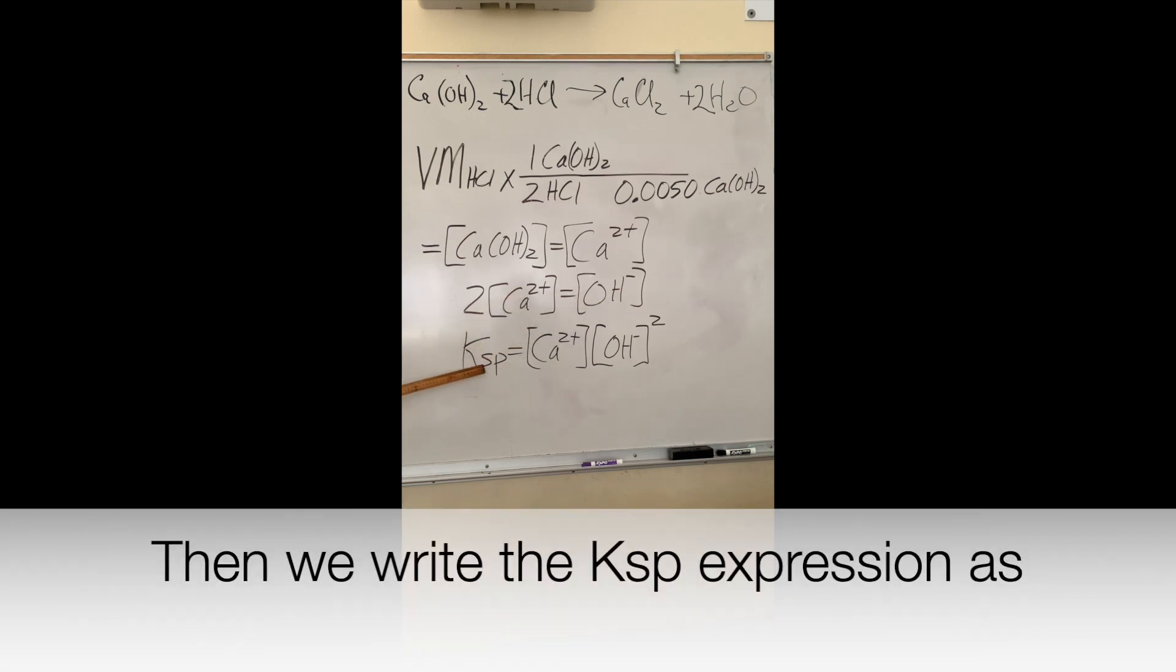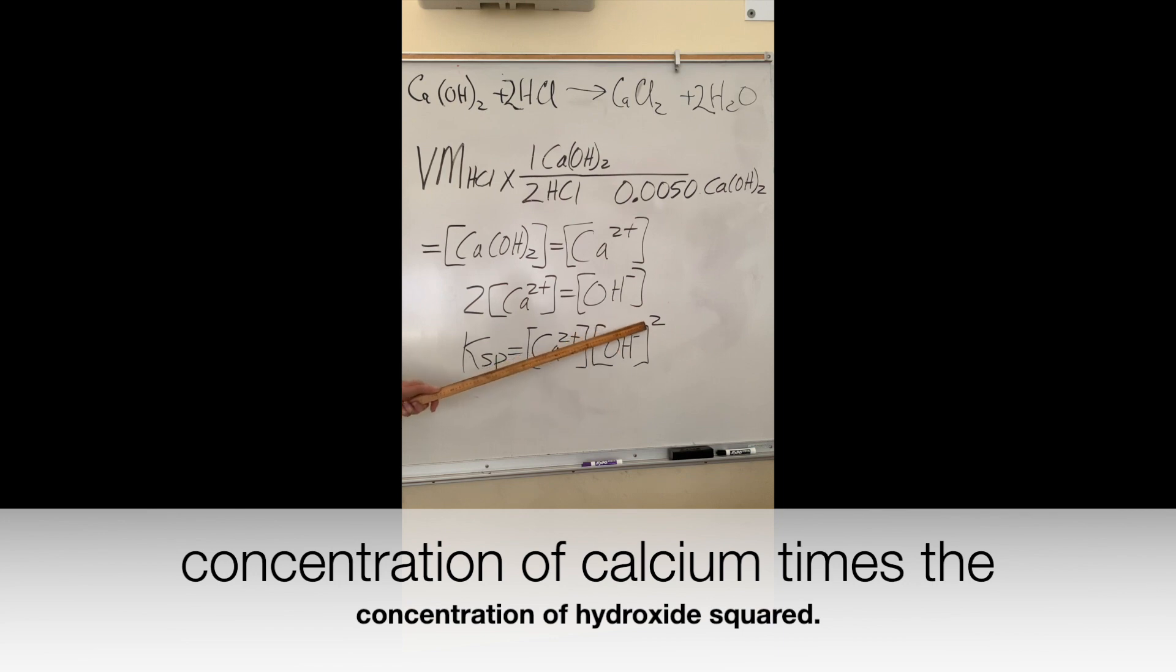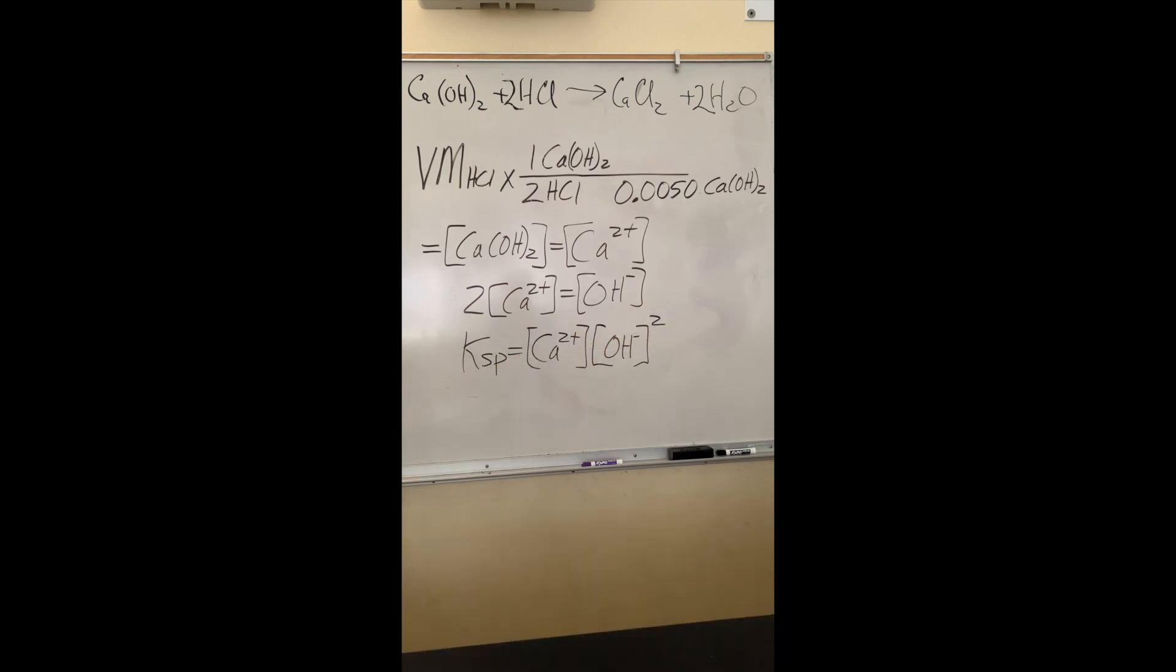Then we write the KSP expression as the concentration of calcium times the concentration of hydroxide squared. Since the coefficient of hydroxide is two, we square that term. This gives us our KSP.